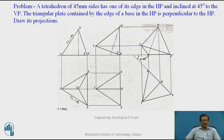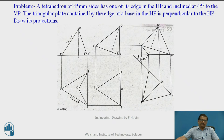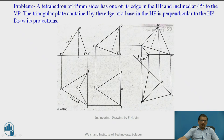We will solve step by step. It is a tetrahedron of 45 mm side, so all sides will be 45 mm. One of its edges is in HP. If you observe the tetrahedron, its top view will be an equilateral triangle with apex O joined with vertices 1, 2, 3 — an equilateral triangle of 45 mm side. O1, O2, and O3 are the generators, which will be shown by dark lines.